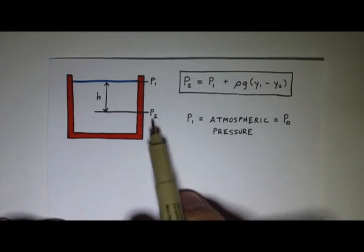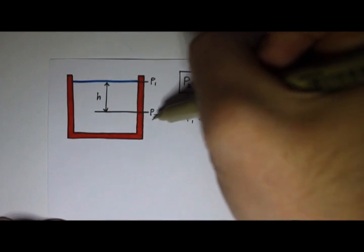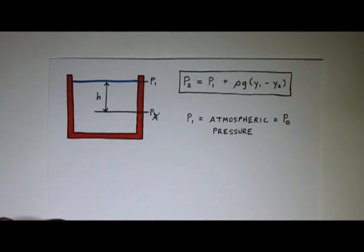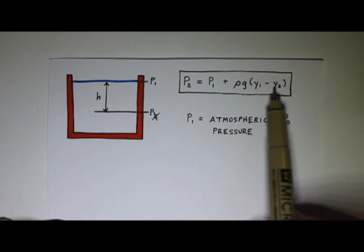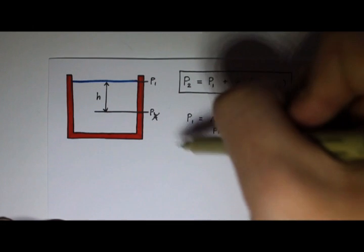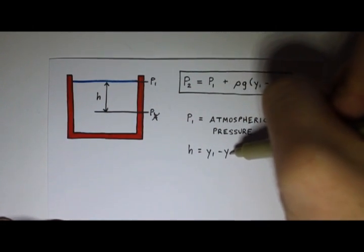And then this other pressure here, p2, let's just call that p, get rid of the 2. And then my depth here, this before would have been y1 minus y2, so my h now is y1 minus y2.